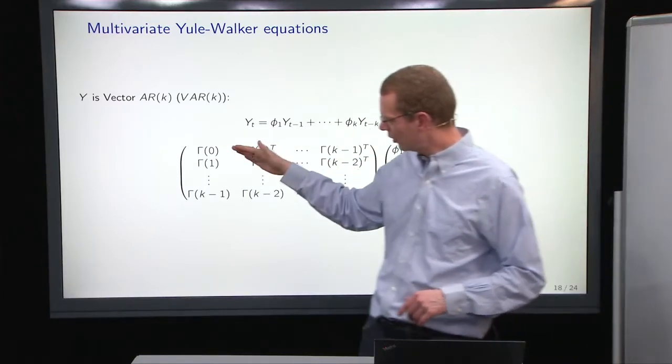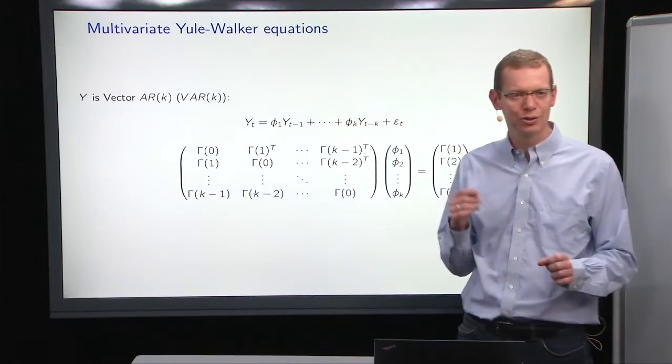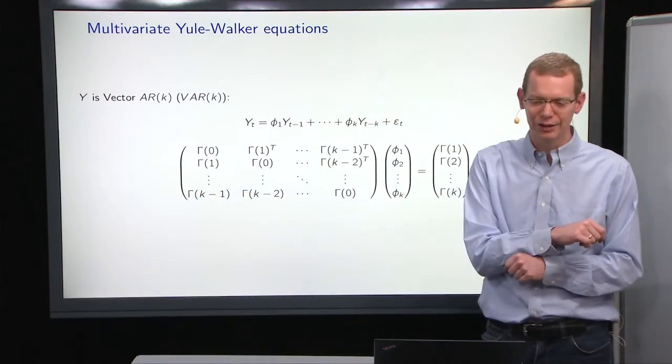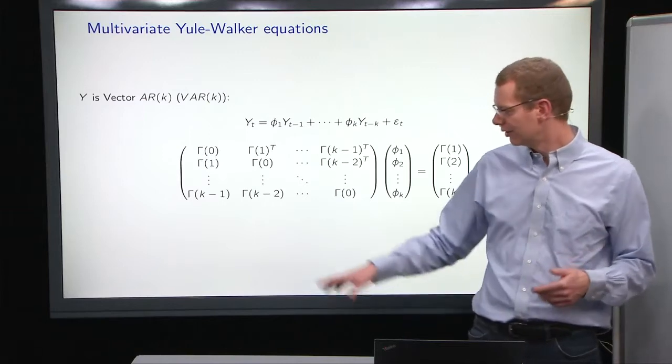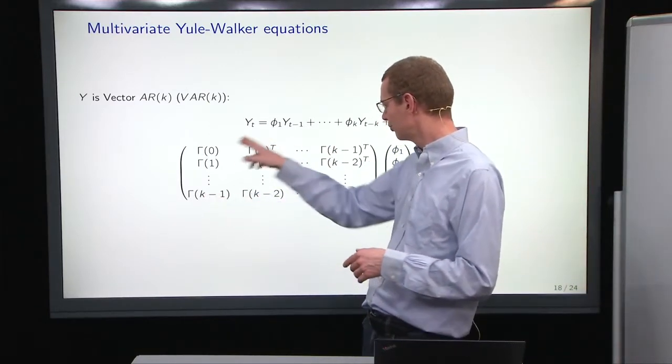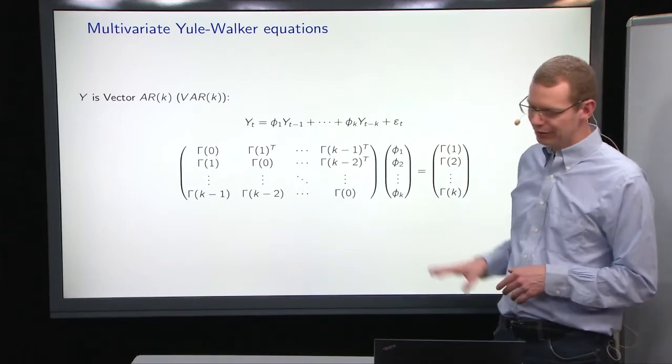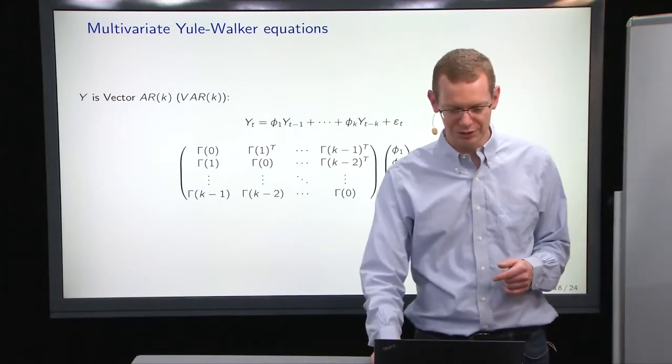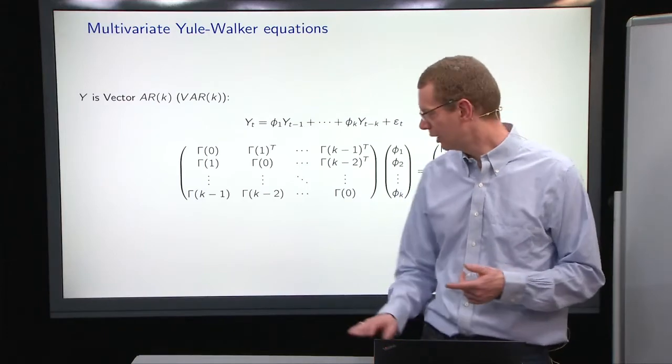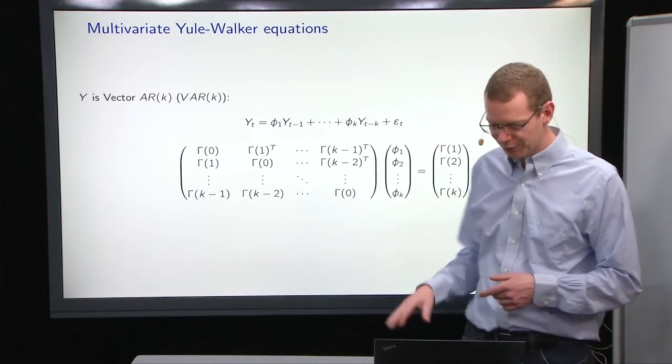So we have done this for all the positive lags. These are the so-called multivariate Yule-Walker equations that can be solved to get an estimate of the coefficients.